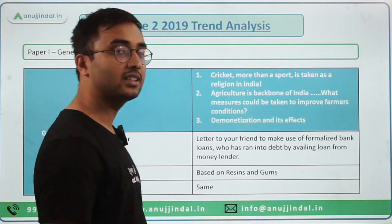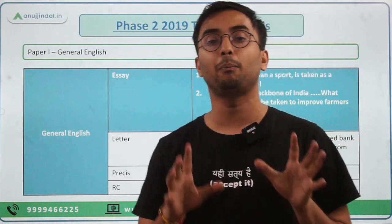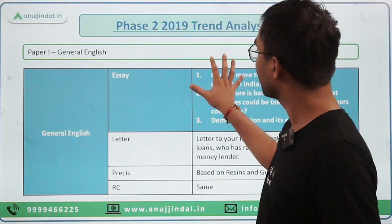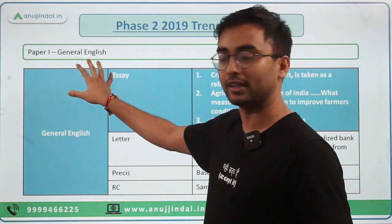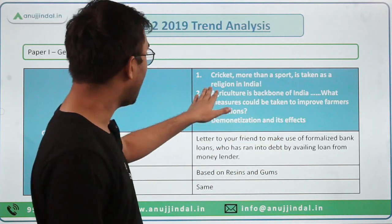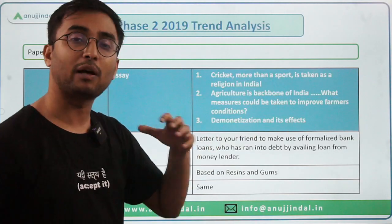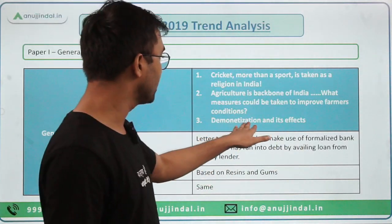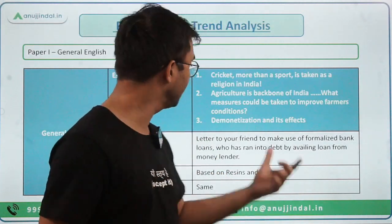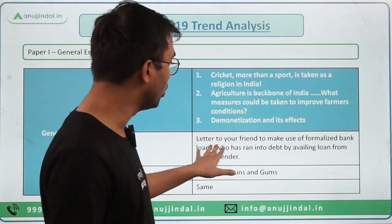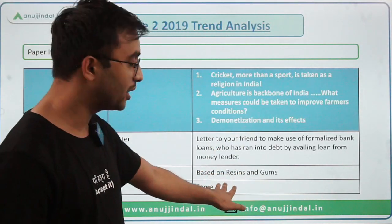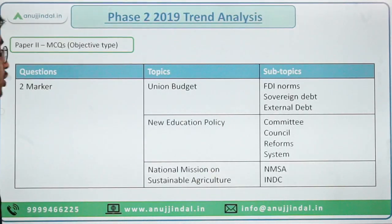Now let's start the trend analysis, beginning with the year 2019, Paper 1 — General English, which included essay, letter, precis, and reading comprehension. The essay topics were: cricket — more than a sport it is taken as a religion in India; agriculture is the backbone of India — what measures could be taken to improve the farmer's condition; and demonetization — the effects of demonetization were seen after one to two years. The letter was to a friend who was taking a formalized bank loan. Precis and reading comprehension were based on resins and gums.